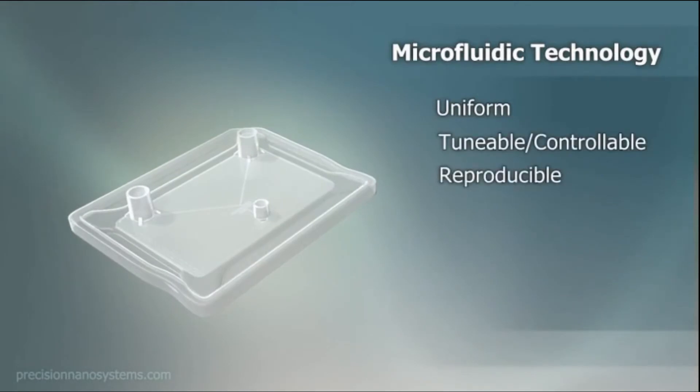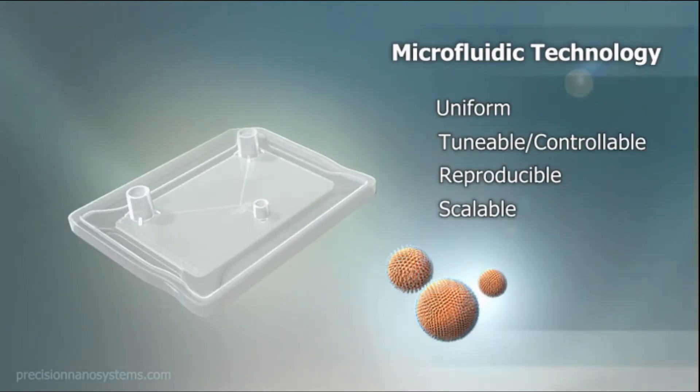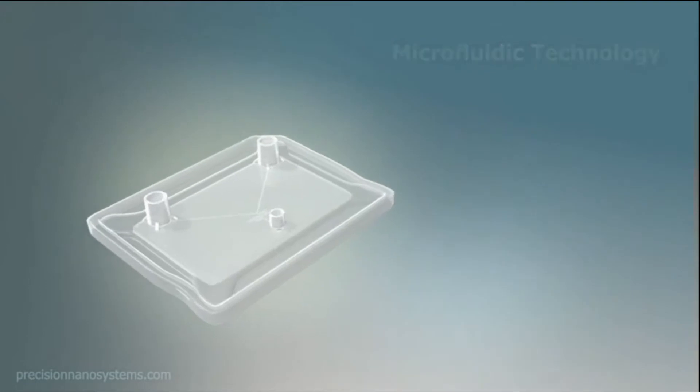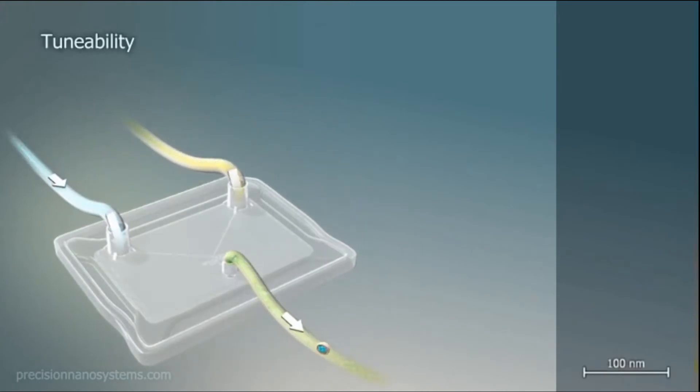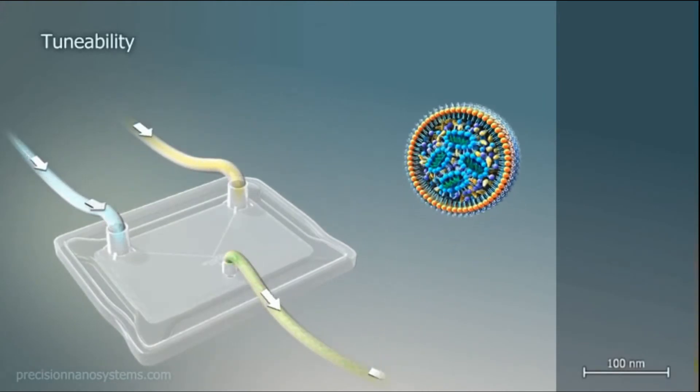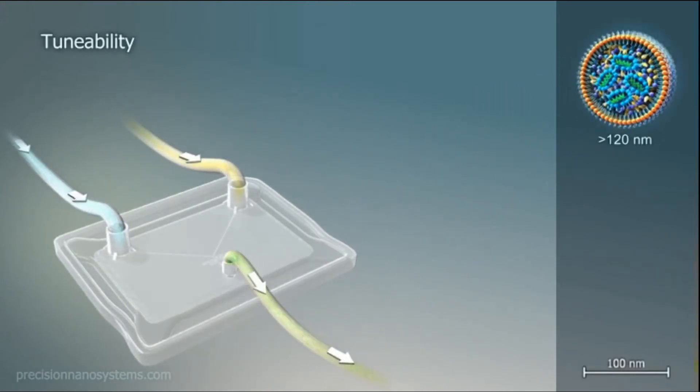Precision Nanosystems enables the simple manufacture of nanoparticles using microfluidics. Our mixing cartridge promotes self-assembly of uniform particles with controllable, reproducible, and fully scalable results. One example is solid core lipid nanoparticles to deliver genetic medicines, which are easily made in one step using the microfluidic cartridge.